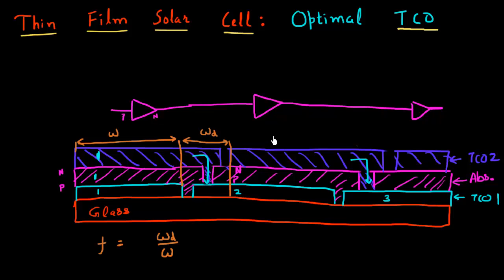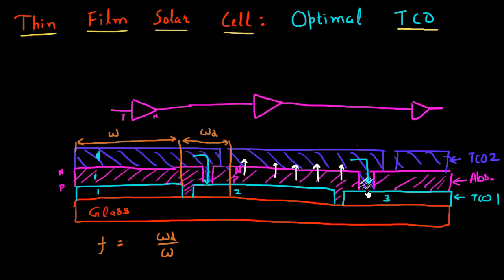But this poses another problem. The problem with the large width of these thin film cells is that of I-squared-R drop, or the resistive drop across these TCO materials. These cells are interconnected using these TCO materials, so the current would essentially be coming into this TCO material. From all the photons which are being absorbed, they get collected in this top TCO, and then there's a series connection between this and the next cells.